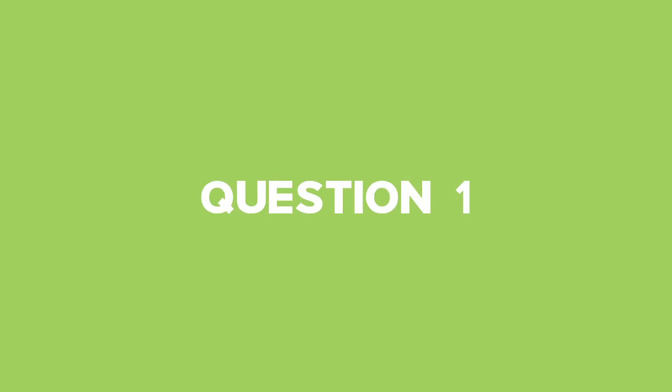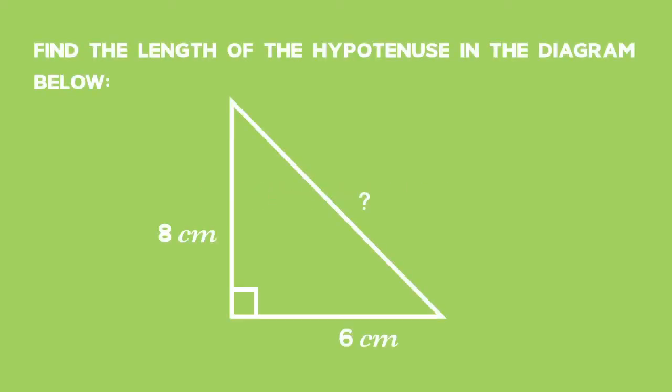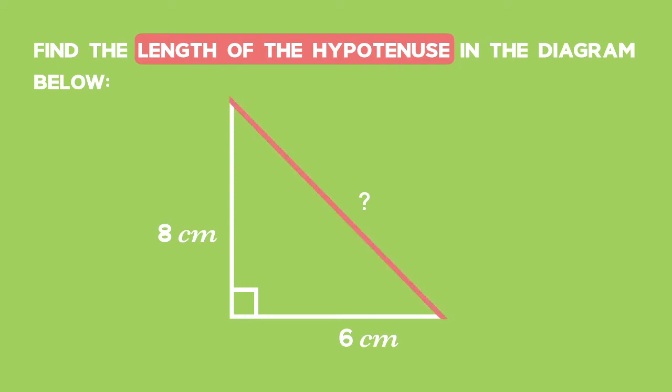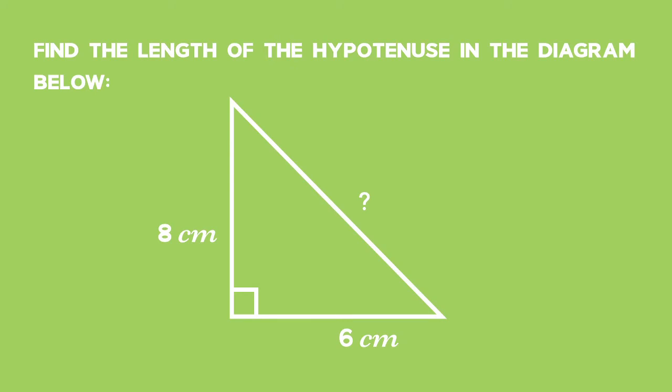Question 1. Let's use the theorem of Pythagoras to help us find one of the unknown sides in a right-angled triangle. The question says: find the length of the hypotenuse in the diagram below. The hypotenuse is the longest side in the triangle — it's the side opposite the 90-degree angle.